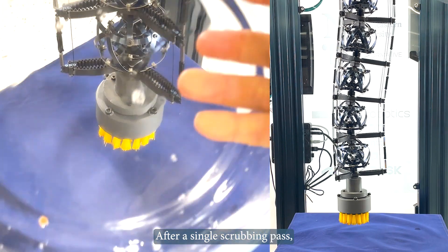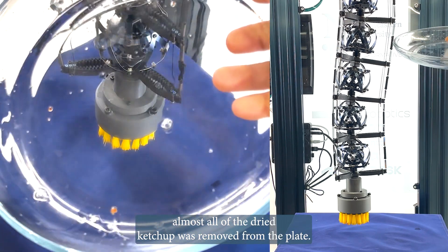After a single scrubbing pass, almost all of the dried ketchup was removed from the plate.